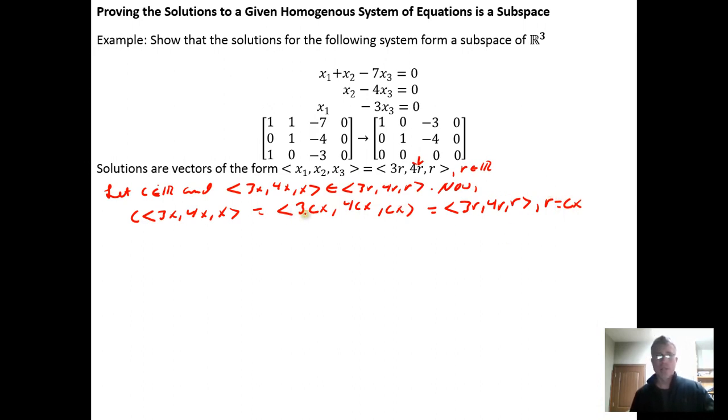So we're closed under scalar multiplication, because when we multiply by a scalar, we get a vector that has the form that is required for membership in this subset, 3r, 4r, r. Thus, vectors of this form, the subset is closed under scalar multiplication.